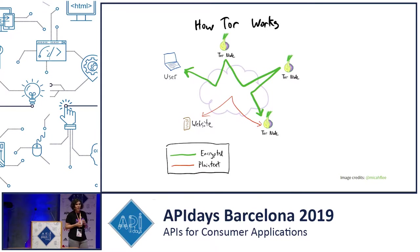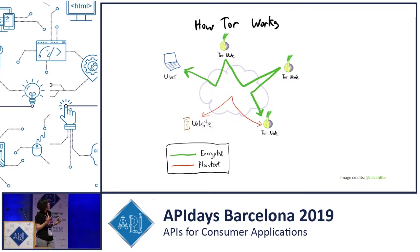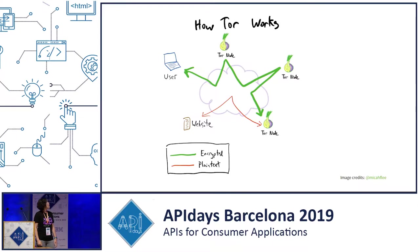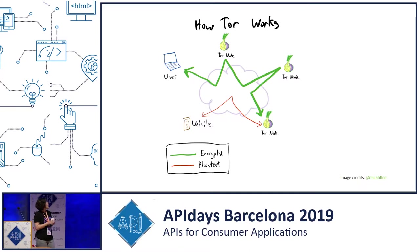So this might be a good moment to explain how the Tor network works. Say that you're a user and you want to visit a website on the internet without anyone knowing the IP address where you originated from. You can use the Tor network — for example the Tor browser — which would form a circuit across the Tor network comprised of three relays. The first relay knows your IP address but has no idea where you're going. The second node knows that some user somewhere wants to visit another node on the network. And the third node knows that some user on the internet wants to visit some site on the internet. This connection is end-to-end encrypted from the moment it enters the network until the moment it leaves the network.